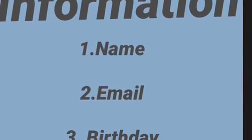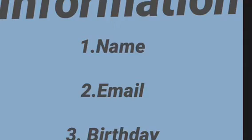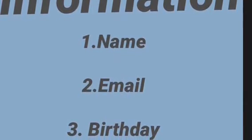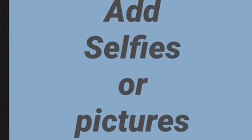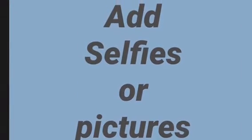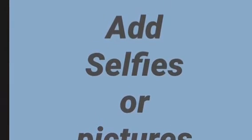Third step: add your information — your name, your email, your birthday, and your interests and hobbies. Fourth: add a selfie or a picture; you can have up to five.